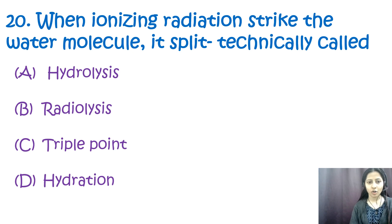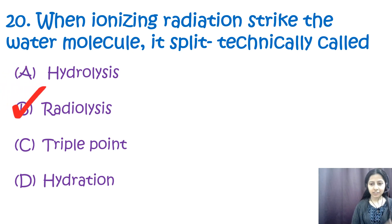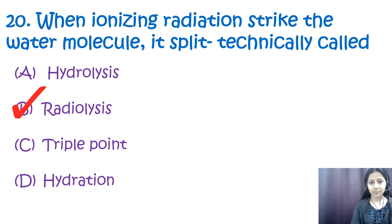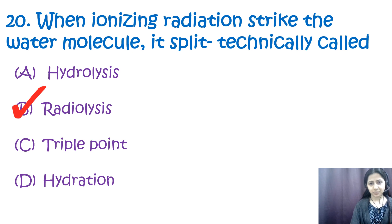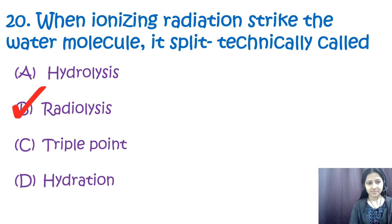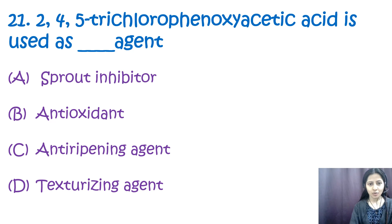Question number twenty: when ionizing radiation strikes a water molecule it splits — technically called: a) hydrolysis, b) radiolysis, c) triple point, d) dehydration. The correct option is b, radiolysis. When ionizing radiation strikes a water molecule, it splits into hydrogen ions (H+) and hydroxide ions (OH−). Hydrolysis is a chemical reaction in which a water molecule is used to break down compounds. The triple point is the temperature and pressure at which a substance exists simultaneously in solid, liquid, and gaseous states. Hydration is the process of adding water to a substance.